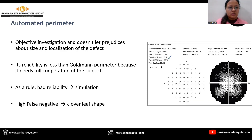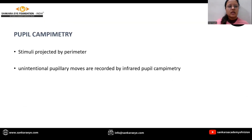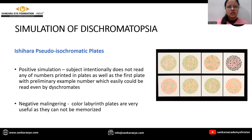In automated perimetry, it is an objective investigation and does not allow prejudice about the size and localization of the defect. Its reliability is less than Goldman perimetry because it needs full cooperation from the patient. Poor reliability negates simulation, and a high number of false negatives can lead to a cloverleaf-shaped field. In pupil campimetry, stimuli are projected by the perimeter and unintentional pupillary movements are recorded by infrared pupil campimetry.